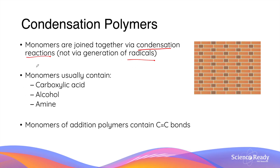The monomers used in condensation polymerization usually contain one or more than one of the following functional groups: carboxylic acid, alcohol, and amine. Compare this to the monomers of addition polymers that we saw before, whereby they contain a carbon-to-carbon double bond.